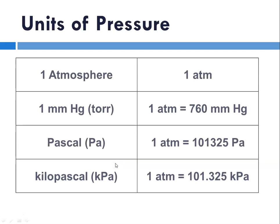The units of pressure we typically use are the atmosphere (ATM), millimeters of mercury (one ATM is equivalent to 760 millimeters of mercury), and torr (for Torricelli). The SI unit of pressure is the Pascal. One atmosphere is 101,325 Pascals, so it's more convenient to use kilopascals. One ATM is 101.325 kilopascals.